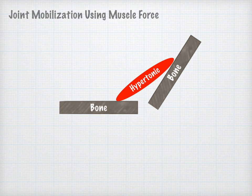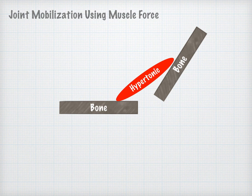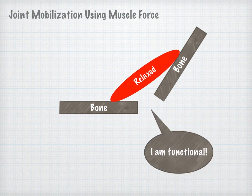Restoration of motion to the articulation results in a gapping or receding of the distorted joint, with reflex relaxation of the previously hypertonic musculature.